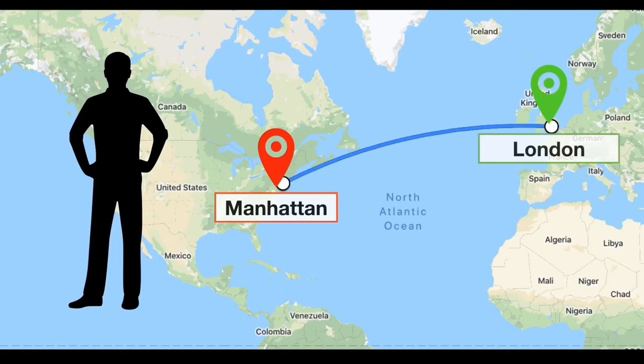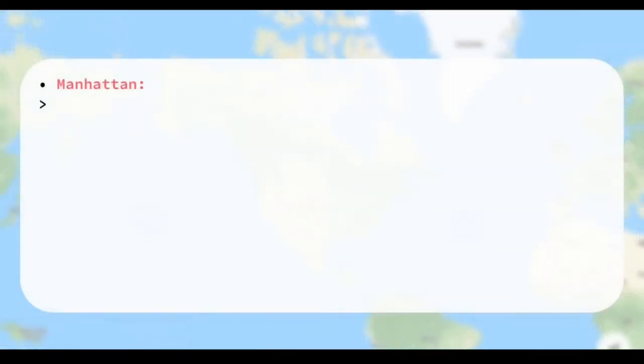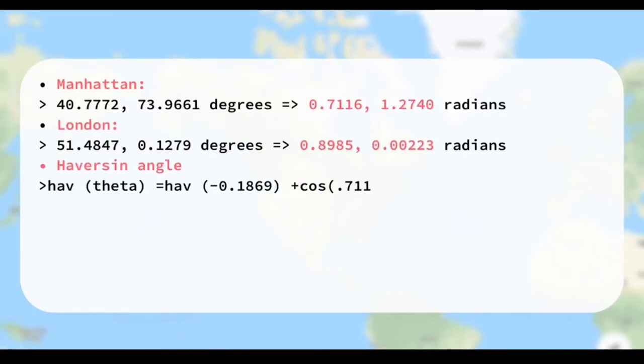The geographic position for Manhattan is 40.7, 73.9 degrees, whereas London is located at 51.4, 0.12 degrees. Converting those values to radians and calculating for theta using the formula of Haversine,